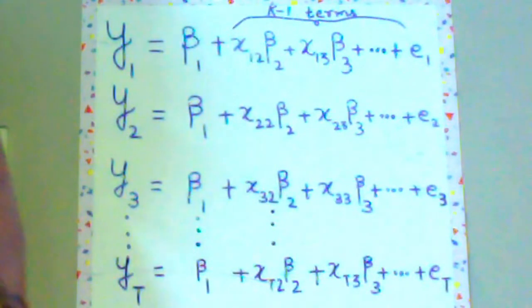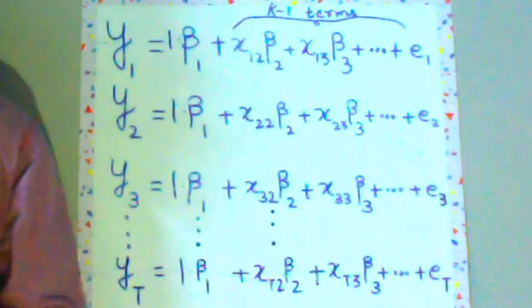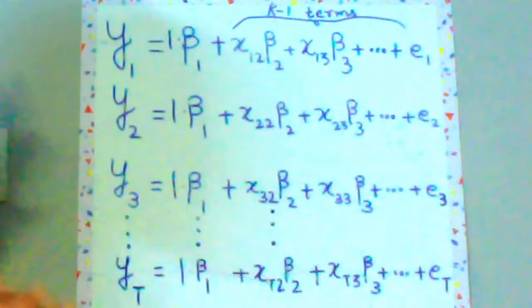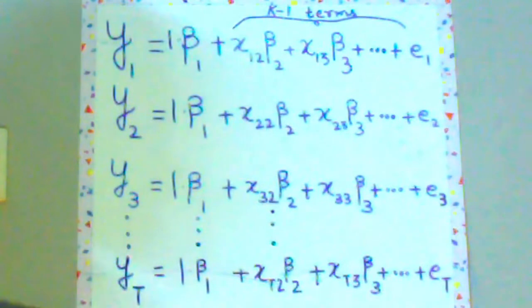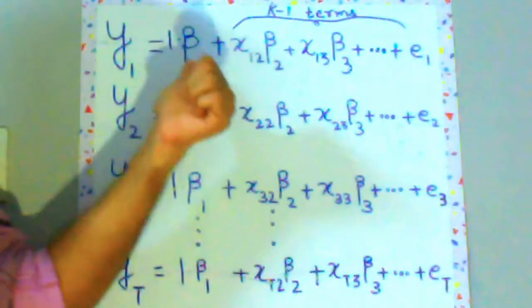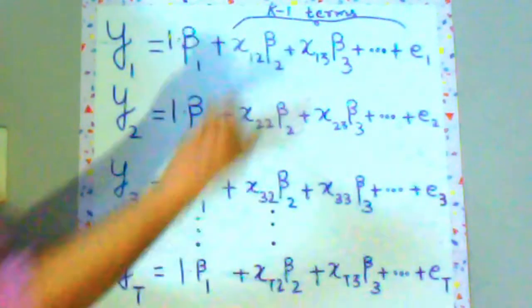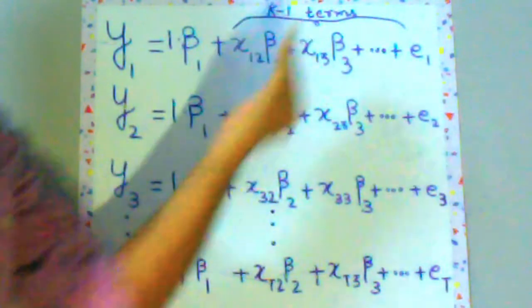You can also think of it alternatively as beta 1 having 1 as the coefficient. Now that would be easier in the further analysis as we see. So to sum it up we have a different set of notations. You have t observations. That's why y1 to yt and you have k-1 predictors and one intercept term.